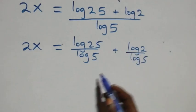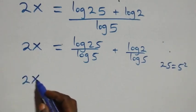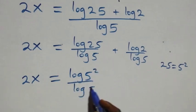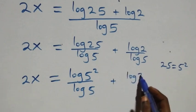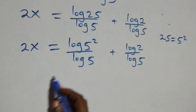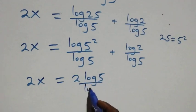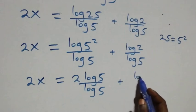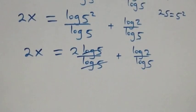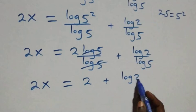We can express 25 as 5 squared, so 2x equals log(5 squared) over log 5 plus log 2 over log 5. Applying the power rule, log(5 squared) over log 5 becomes 2·log 5 over log 5. Log 5 cancels, and we are left with 2x equals 2 plus log 2 over log 5.